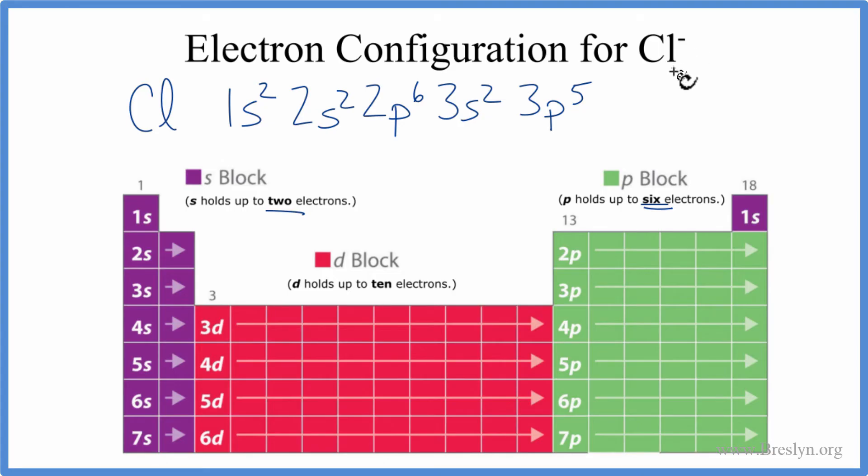Electrons are negative, so when you gain them, it becomes more negative. So we've gained one more electron here for the chloride ion. We're just going to add that here, plus one, and that'll give us 3p6.